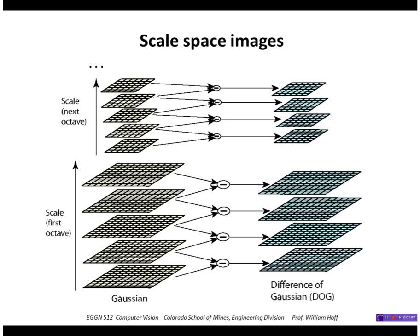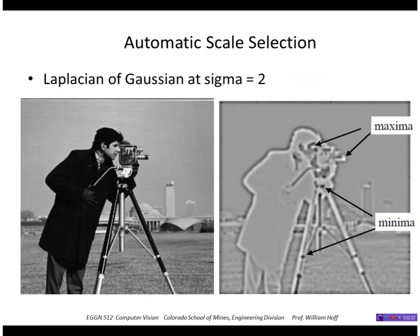This shows the scale space of images where we apply a Gaussian of increasing values of Sigma. At some point we can subsample the images without loss of information. We then take the difference between every pair of images in the stack, giving us a Difference of Gaussian array. We can then look for peaks in this array both laterally and between the images above and below. Here we can see peaks found at several points, including minima and maxima.